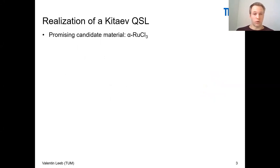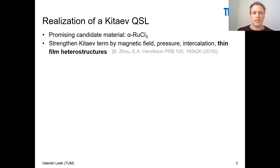However, there is a problem associated with bulk alpha-ruthenium trichloride. It orders antiferromagnetically at low temperatures, indicating that the Kitaev term is not the strongest term in this Hamiltonian. Therefore, several ways have been discussed to strengthen the Kitaev term in alpha-ruthenium trichloride to actually see that it will be a quantum spin liquid. These different ways include the application of a magnetic field or pressure, intercalation, or the construction of heterostructures. Especially the last point will be today's most interesting point.